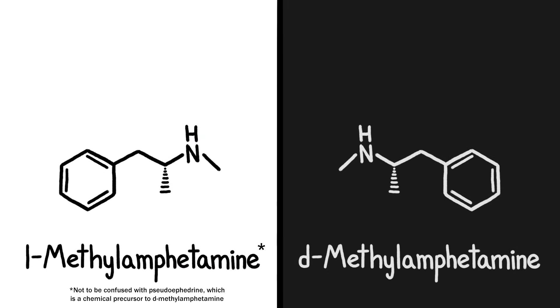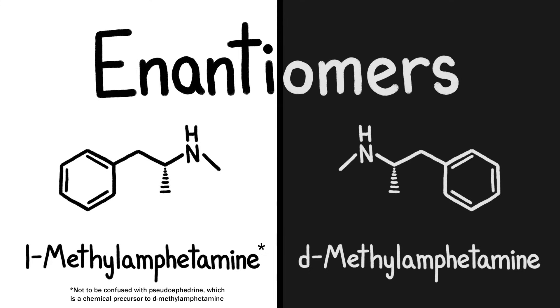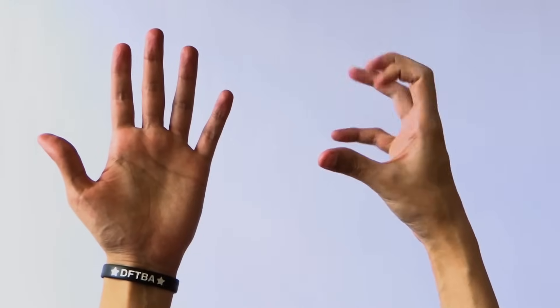These two chemicals are mirror images known as enantiomers. They are sort of like your left and right hands, if your right hand was evil.